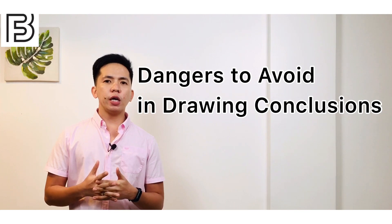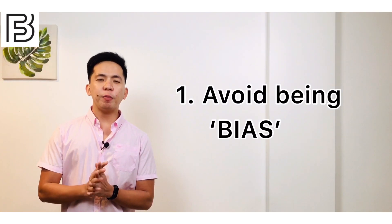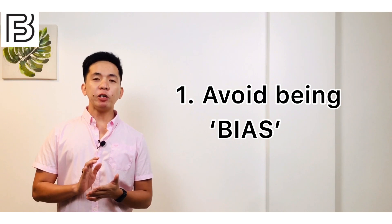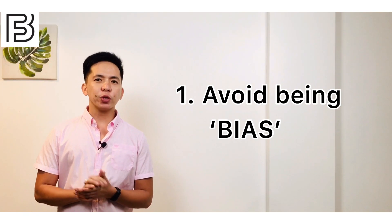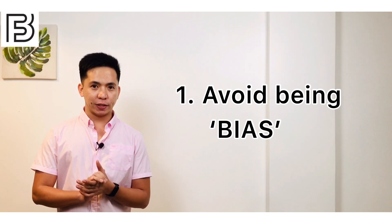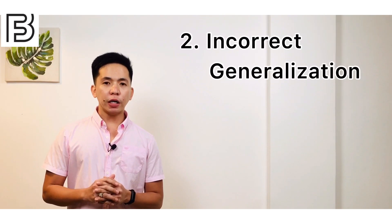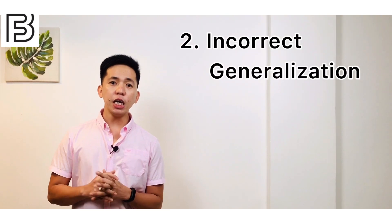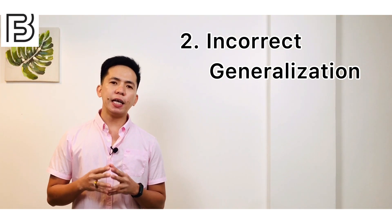Number one: avoid being biased. A respondent to a questionnaire may commit bias to protect his own interest, so do not be biased. Second is incorrect generalization. An incorrect generalization is made when there is a limited body of information or when the sample is not representative of the entire population.